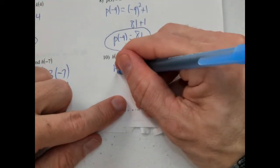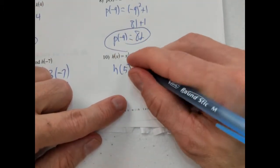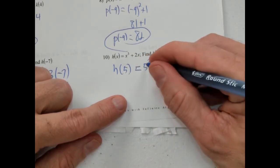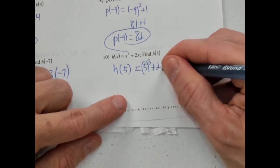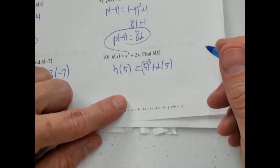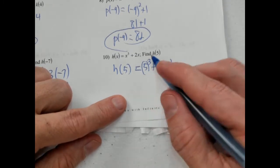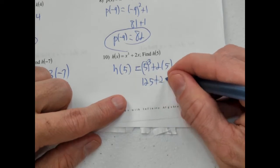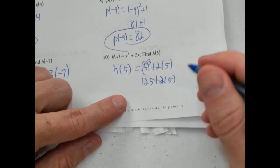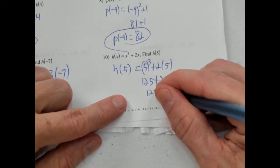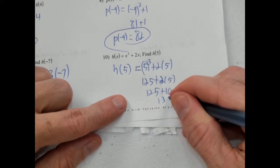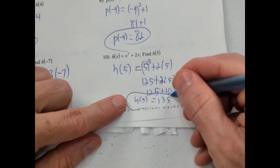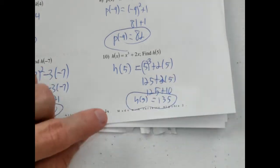h of 5 equals 5 cubed plus 2 times 5. 5 cubed is 125, plus 2 times 5 is 10. So 125 plus 10 is 135. h of 5 equals 135. Our input is 5, our output is 135.